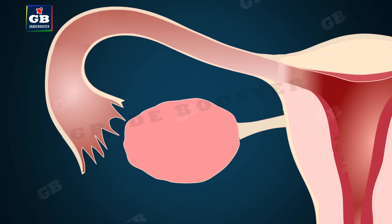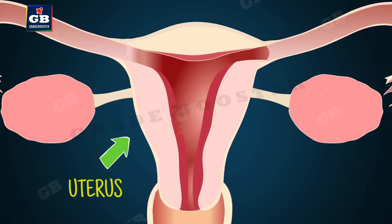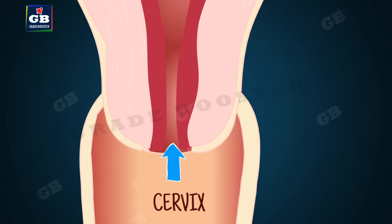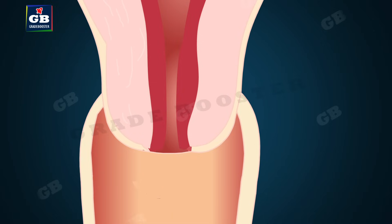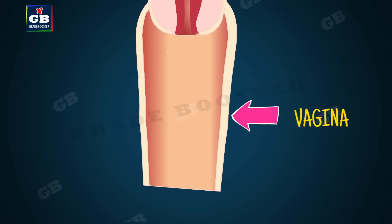The two oviducts unite into an elastic bag-like structure known as the uterus. The uterus, also called the womb, is where the implantation and development of the baby takes place. The cervix is where the uterus opens into the vagina.